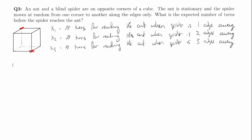Let's write down what the expected value of x3 is. The spider has a one third probability to take each of the three edges. If he takes any one of those edges, he'll be at a corner that's two edges away — so his expected number of turns to reach the ant becomes E[x2]. And in any direction he goes, it costs him one turn, so it's always one plus E[x2].